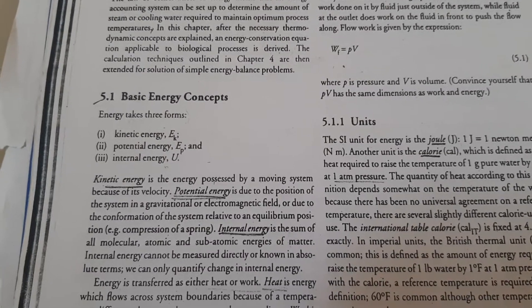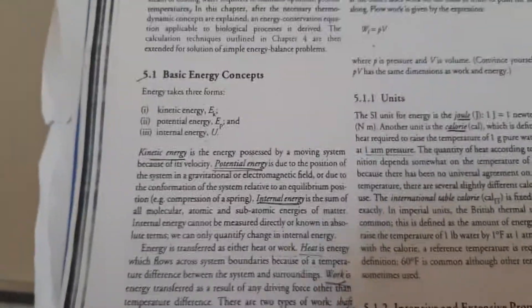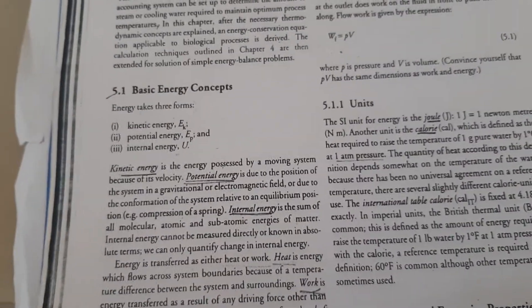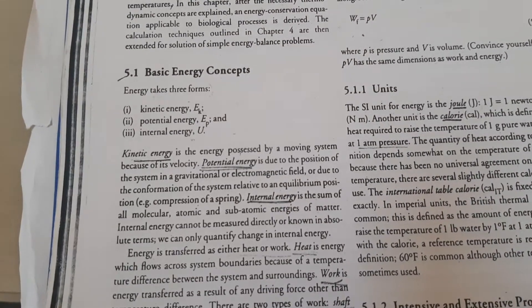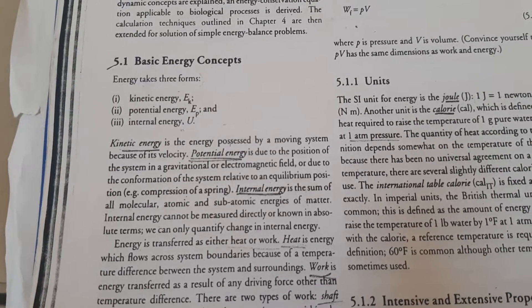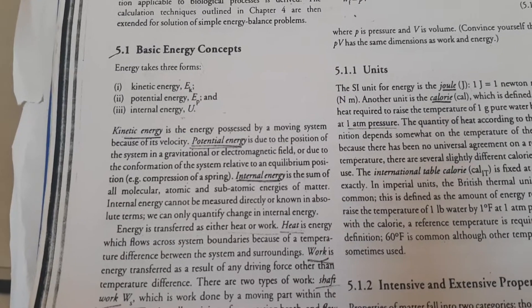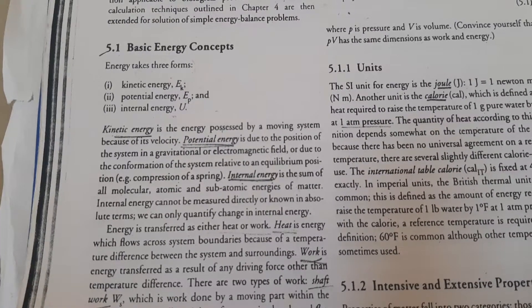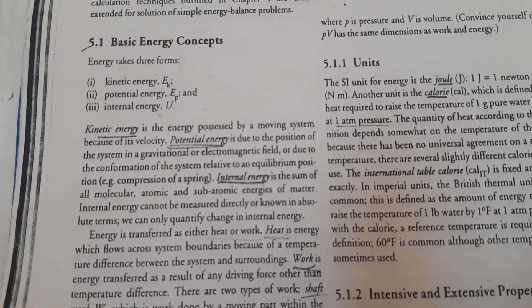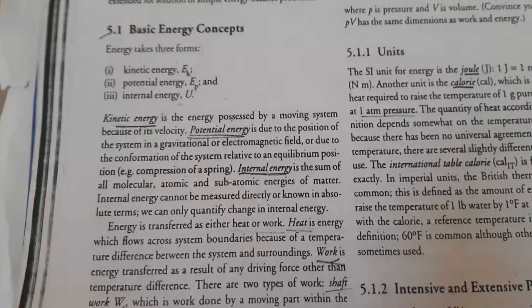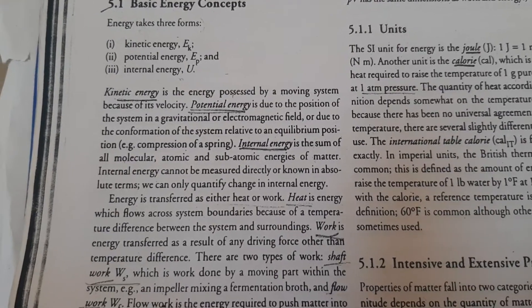Kinetic energy, potential energy, internal energy. We learned these in earlier classes. Kinetic energy, shown as EK, is the energy possessed by a moving system because of its velocity. Potential energy is due to position of system in a gravitational or electromagnetic field or due to conformation of the system relative to an equilibrium position. Internal energy is the sum of all molecular, atomic and subatomic energies of the matter.